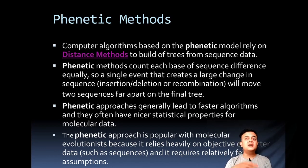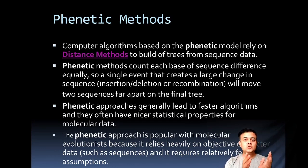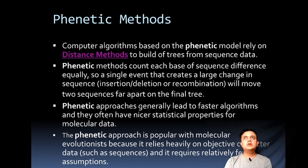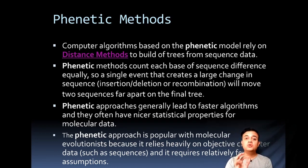Phenetic approaches generally lead to faster algorithms with nicer statistical properties for molecular data. The phenetic method produces one tree instead of millions as in cladistic methods, making it much faster. However, the tree produced might not be optimal — in most cases it's not the best tree. It's convenient, but you sacrifice quality and optimality, so it is not a robust method, though it is much faster.